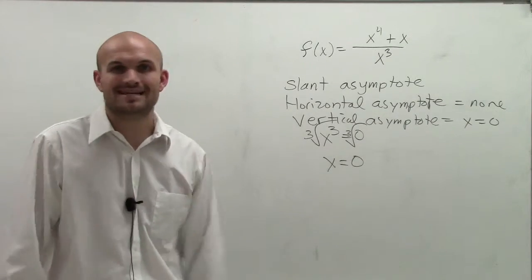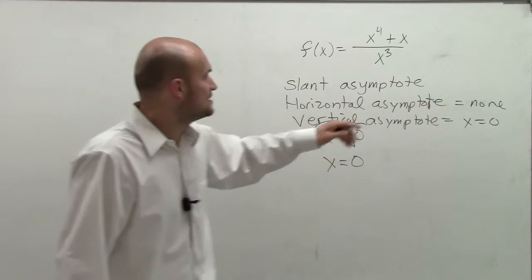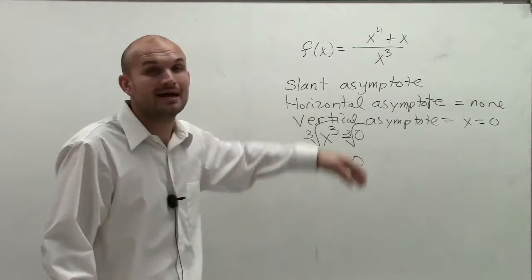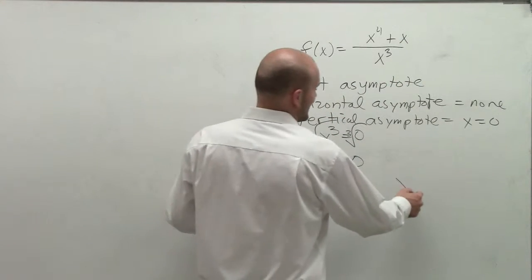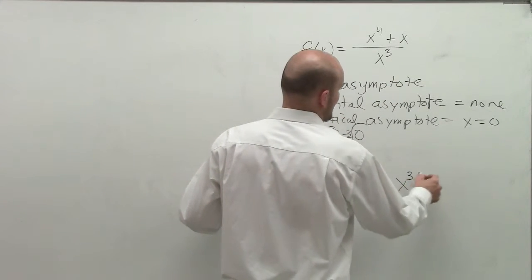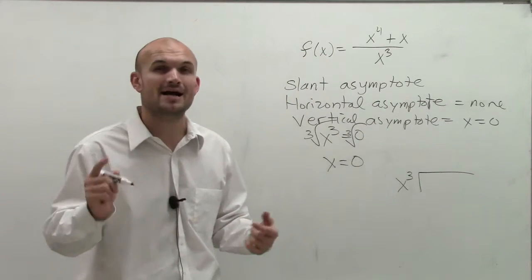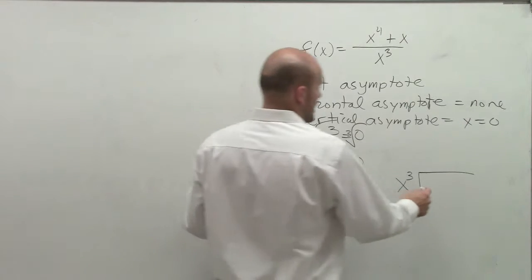So how do we find our slant asymptotes? Let's go back to it. So since this is a lower degree, that means I can divide x cubed into x to the fourth plus x. Now, I can't use synthetic division because this is a denominator to the third power. Synthetic division, we could only use it when it was a binomial to the first power.